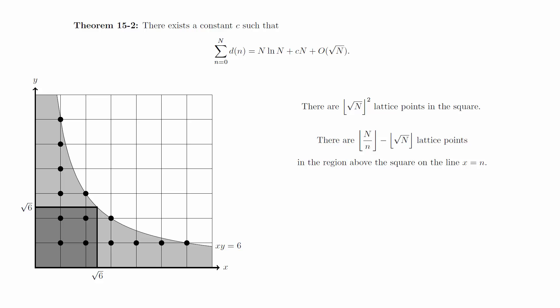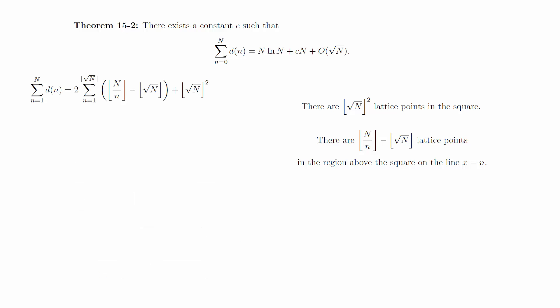The sum of d of n from 1 to capital N is the number of lattice points below the curve of x times y is equal to capital N. And based on the counting scheme above, we have a formula to compute that quantity.